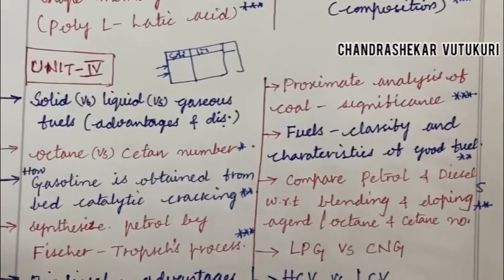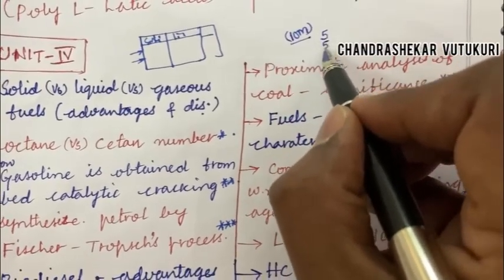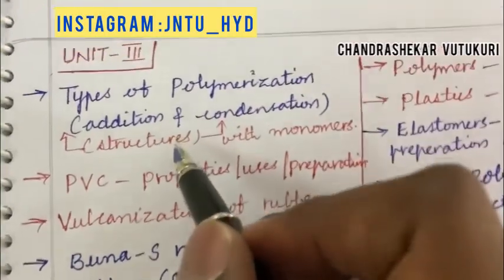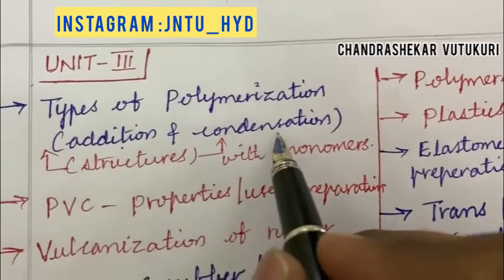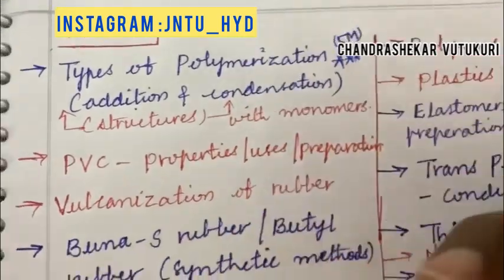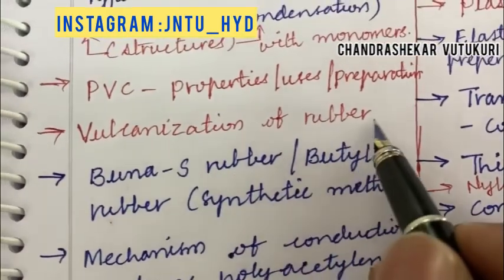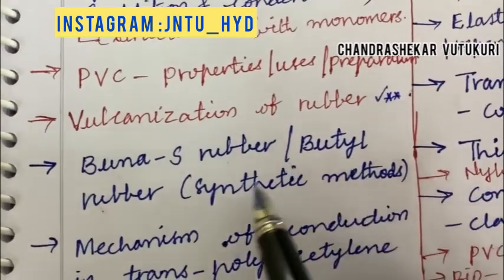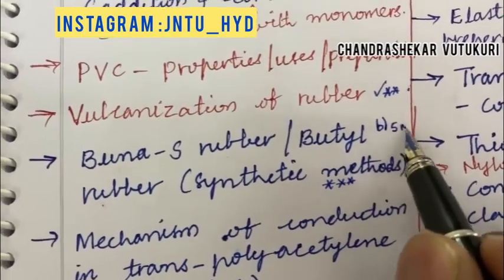The short question is for 1 mark and the long question is 10 marks, but do not expect a direct 10-mark question — it is a split of 5 and 5. Jumping into Unit 3, it is all about polymerization types — addition and condensation — and the structure with monomers related to addition and condensation is said to be a topmost 5-mark question this time, which may be the 4th question in the question paper. PVC — its properties, uses, and preparation — and vulcanization of rubber is also said to be one of the topmost questions. Buna-S rubber and Butyl rubber and their synthetic methods are also said to be one of the topmost questions, which may occur in 4B for 5 marks.